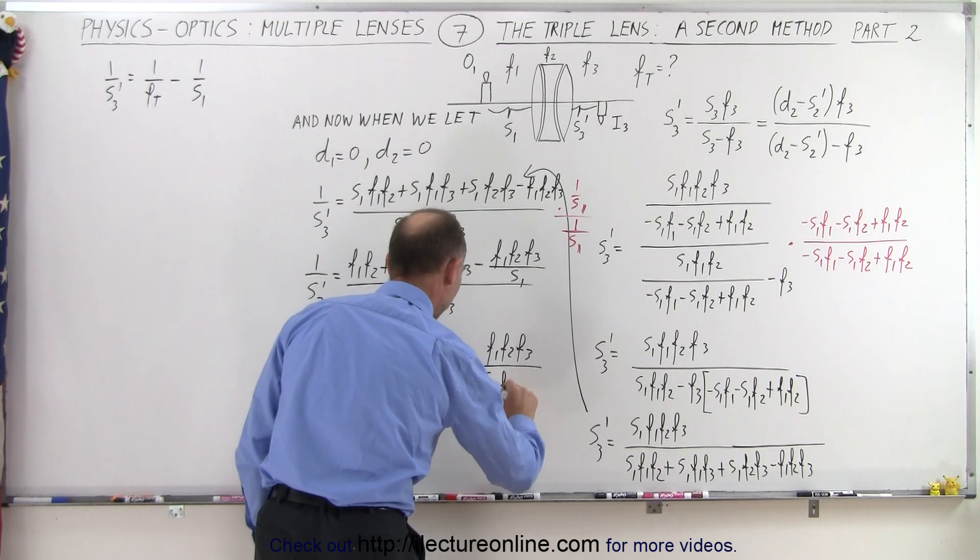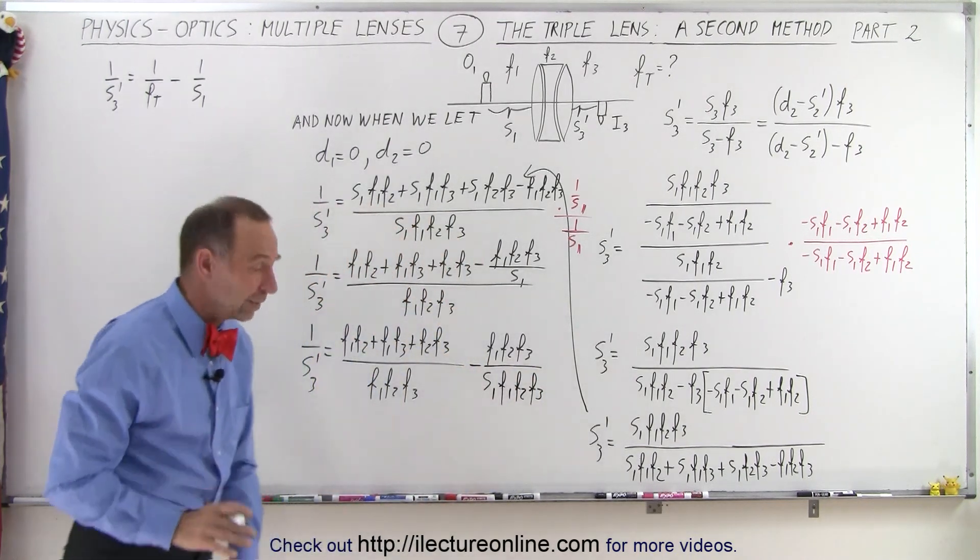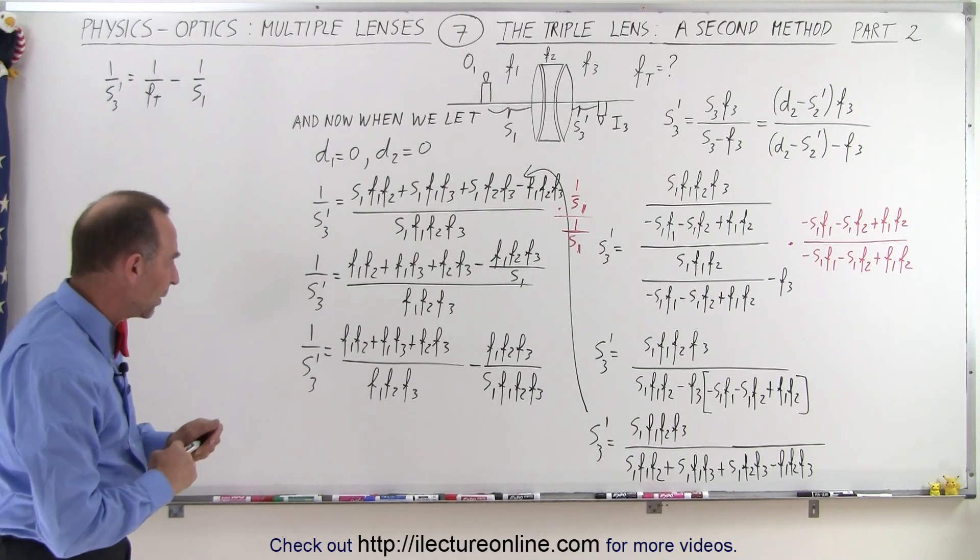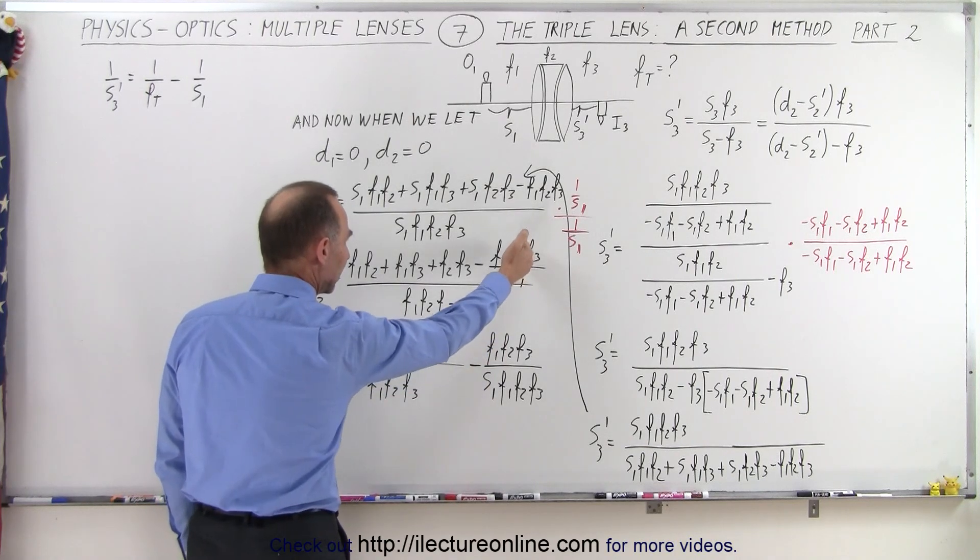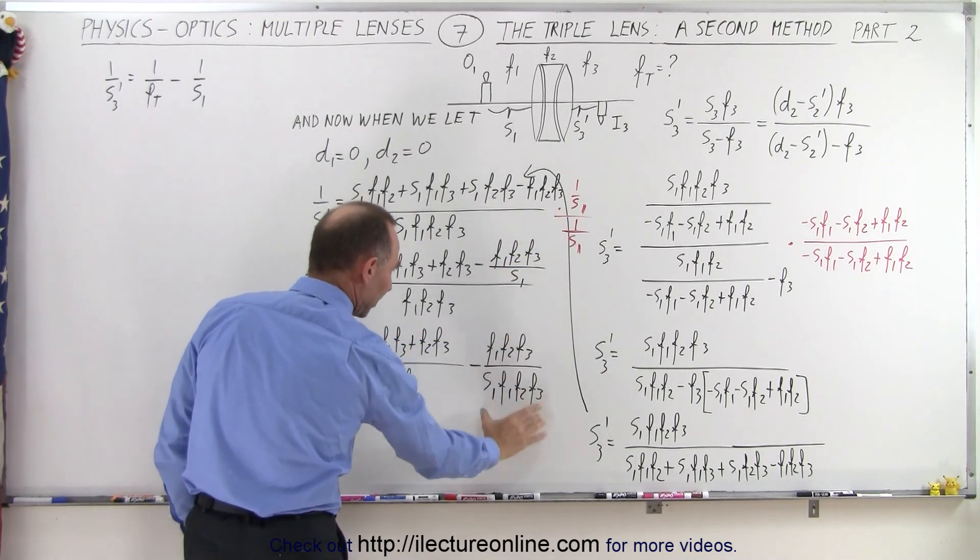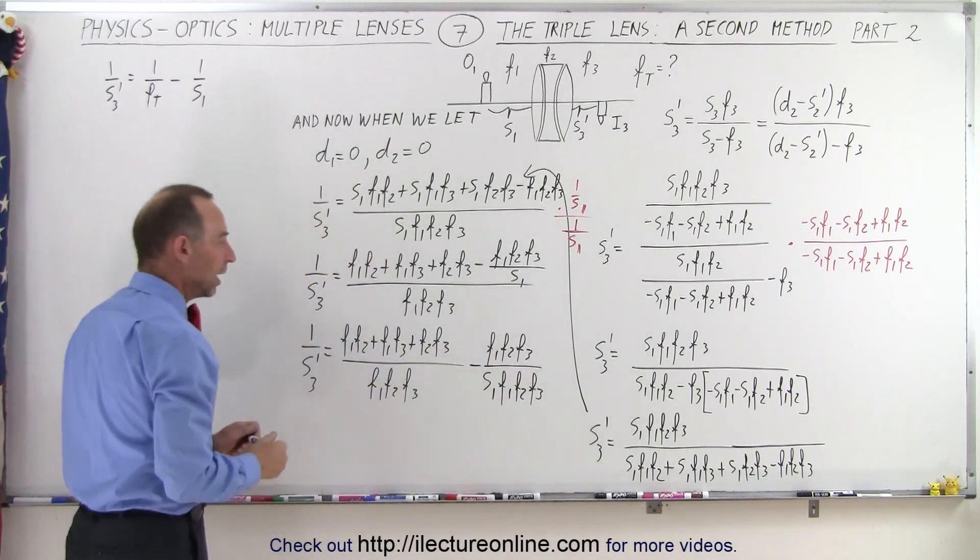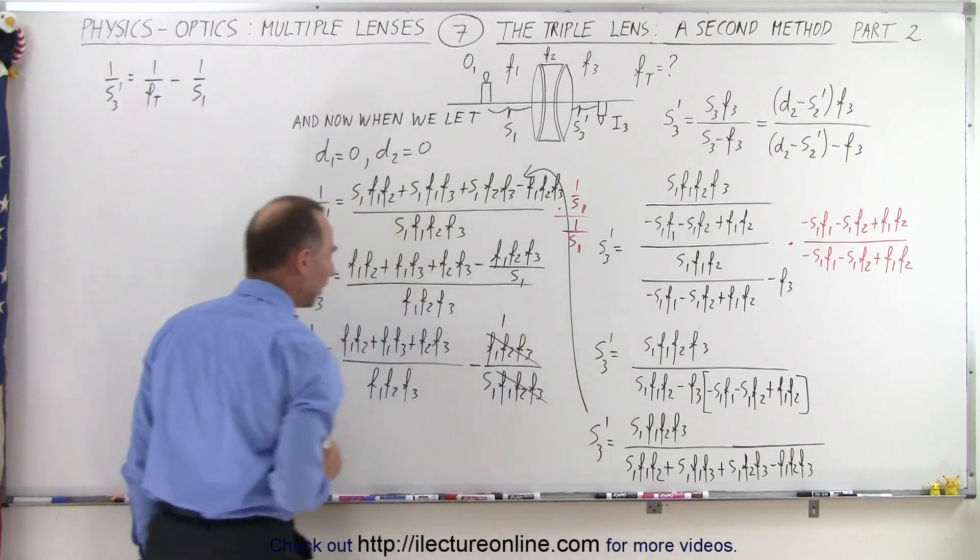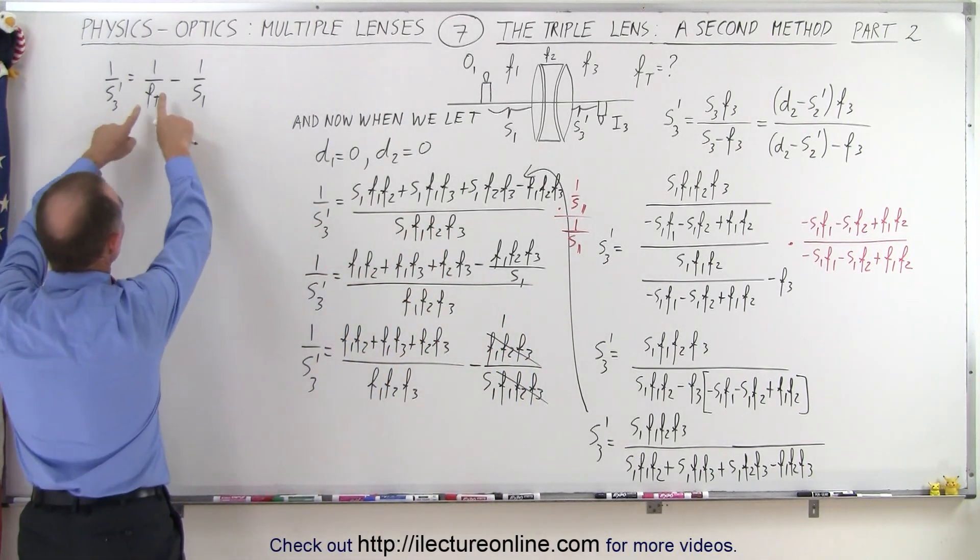So now we have an equation that looks a little bit better. Again, notice what I've done here is I've taken this and brought it as a separate fraction over the denominator and brought s1 down. So now you can see that these cancel out, this becomes 1 over s1. We have 1 over s3 prime, which is what we have over here, but we still need to have the 1 over f total.